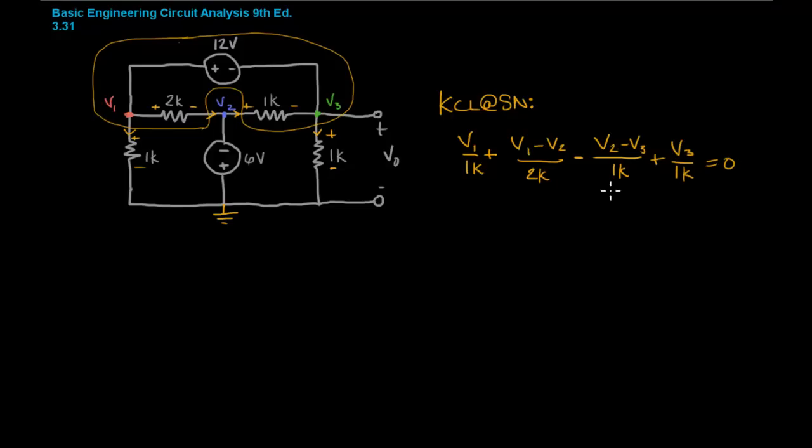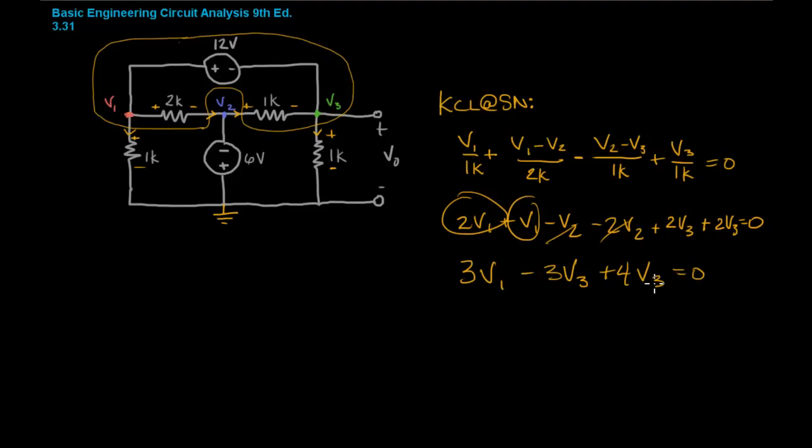Okay so now let's simplify and reduce this equation. So this will be 2V1 plus V1 minus V2 minus 2V2 plus 2V3 plus 2V3 equals zero. And now I'll combine the terms. Those are my only V1 so I get 3V1, and here are my V2 so I'm going to get minus 3V2, and then plus 4V3 equals zero.